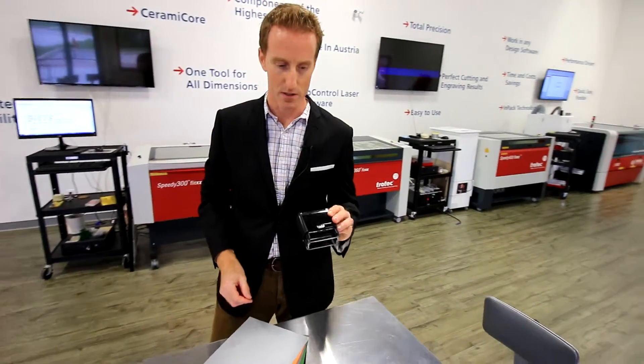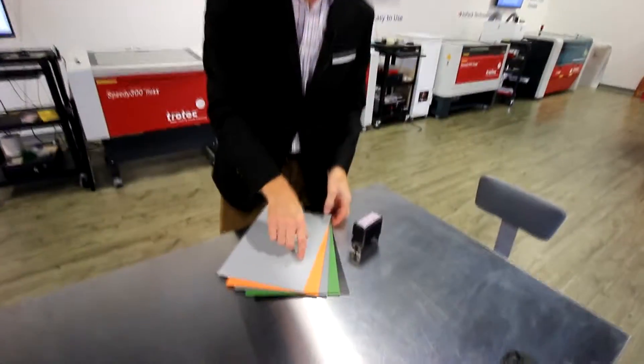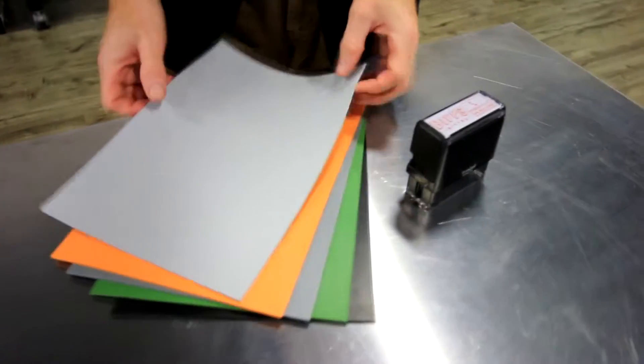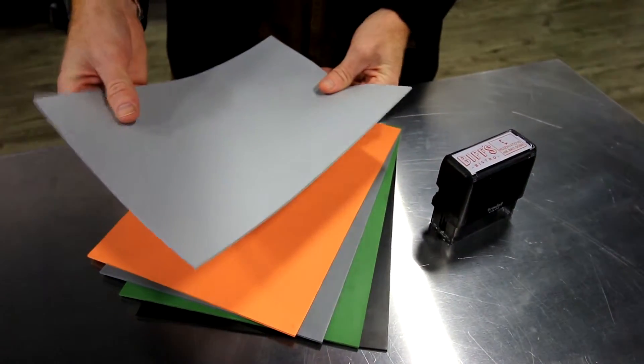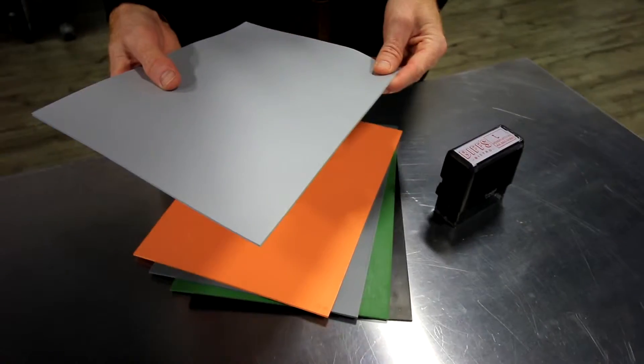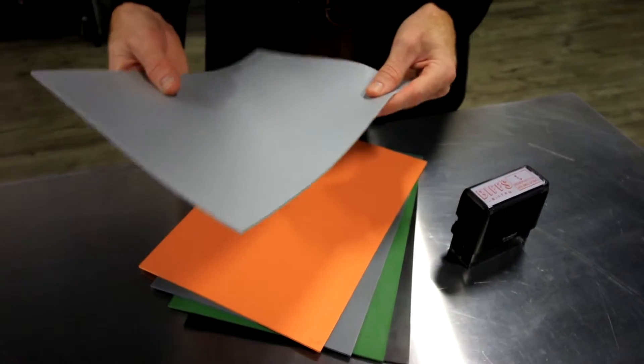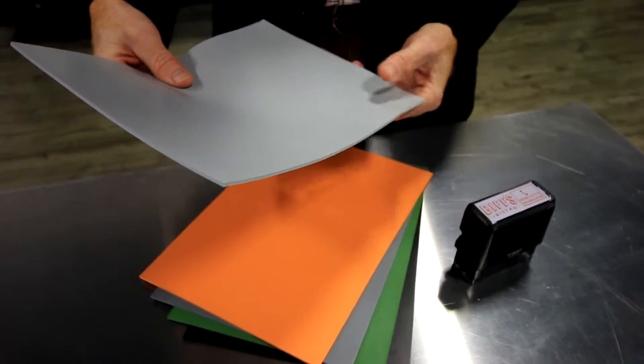Okay, to make one of these stamps you would use laser rubber. These are the five choices we have available. One's called Aero and it's actually a speed rubber. It actually engraves 21 percent faster than regular rubber. This is an odorless rubber so it reduces the amount of smell that comes off the laser.